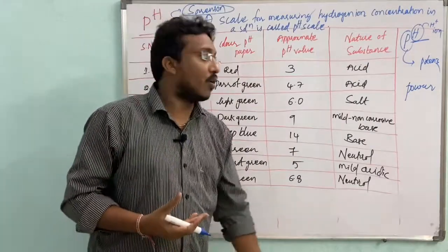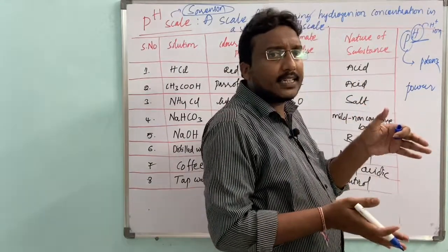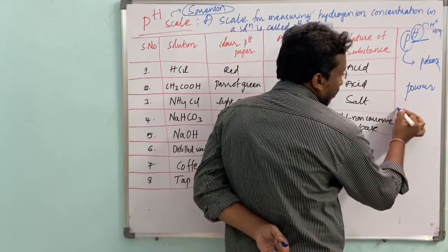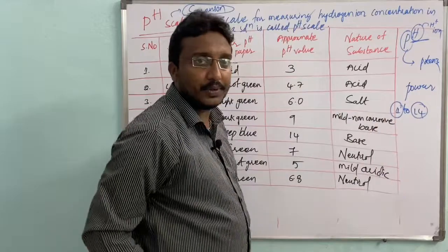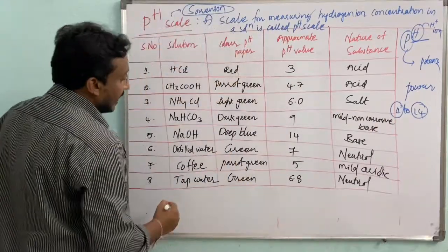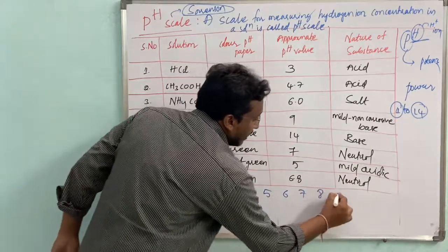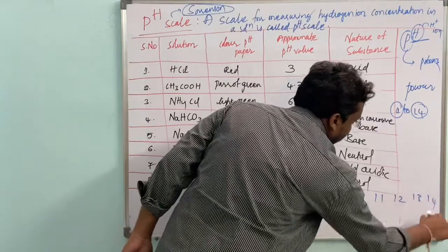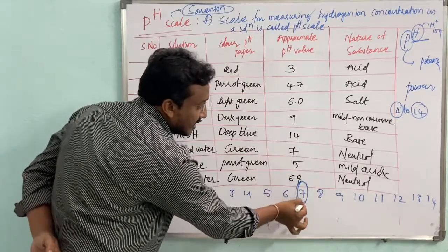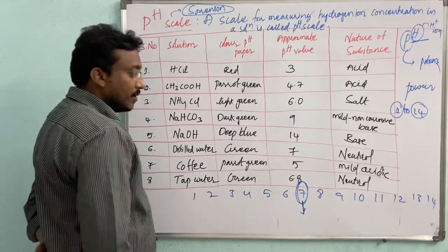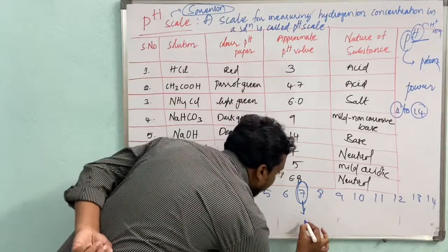The pH scale ranges from 1 to 14. The number 7 on the pH scale indicates a neutral substance — meaning it is a salt.